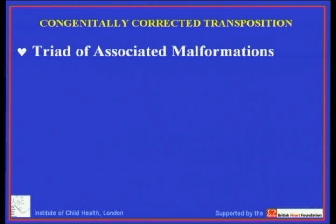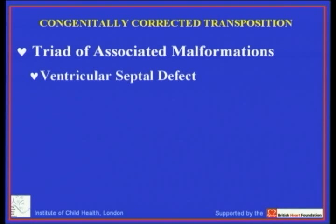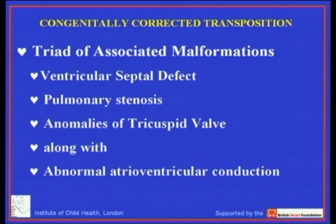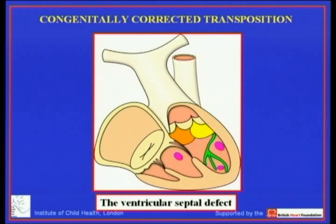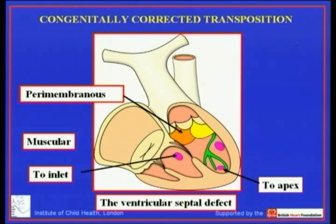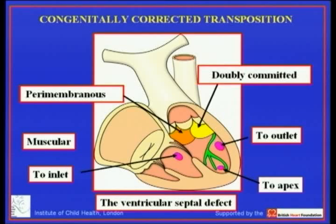What most usually brings these patients to attention is the triad of associated malformations: ventricular septal defect, left ventricular outflow tract obstruction or pulmonary stenosis, and anomalies of the tricuspid valve. There are also commonly problems with the atrioventricular conduction axis. As with regular transposition, we describe the ventricular septal defect as perimembranous, muscular (opening to the inlet, apex, or outlet), or rarely doubly committed.